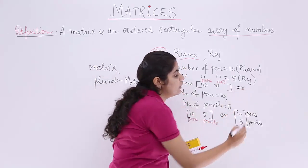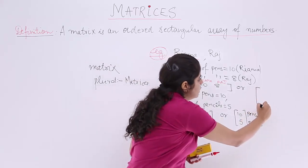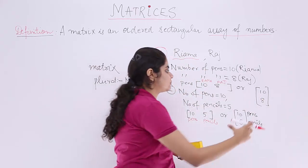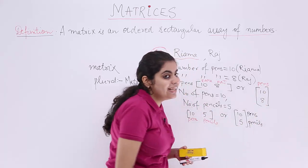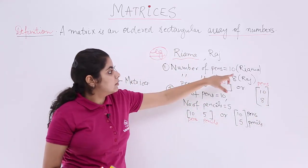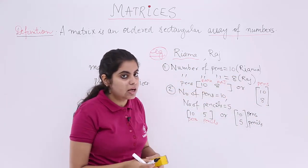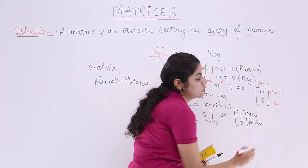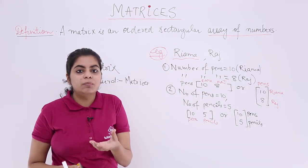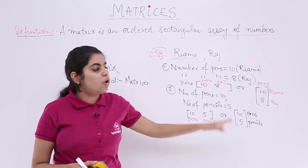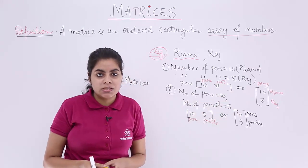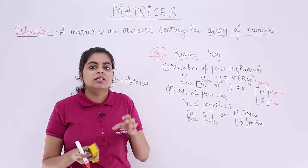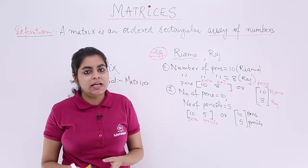The representation can also go the other way. I can write 10 and 8 vertically. Here it is still pens only — 10 for Raima, 8 for Raj. So whatever information you represent for columns, you can also represent it for rows. A matrix is just the arrangement, just the representation of different types of data.